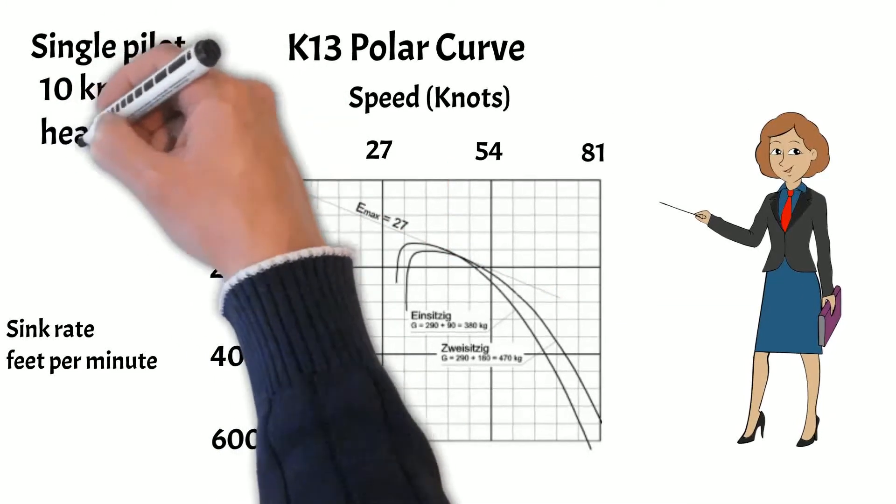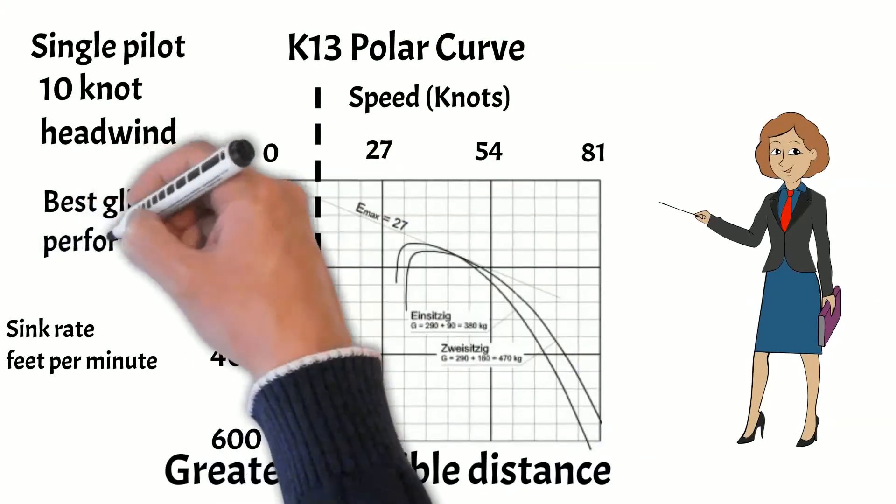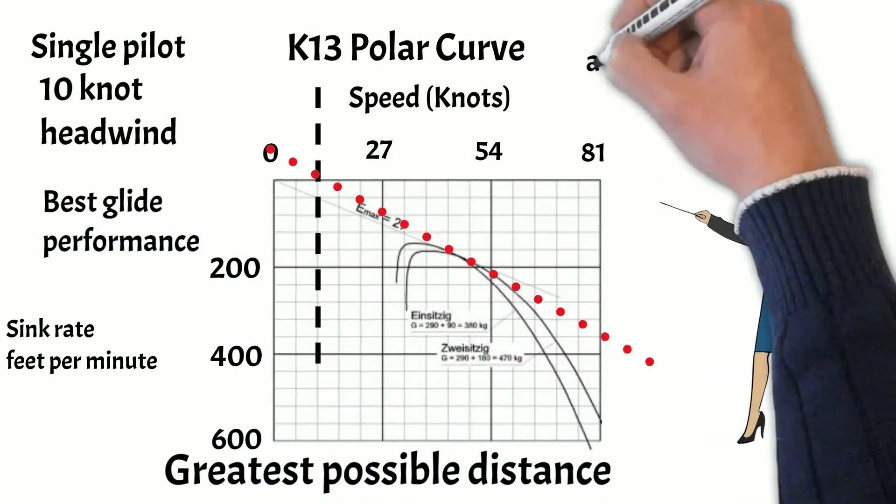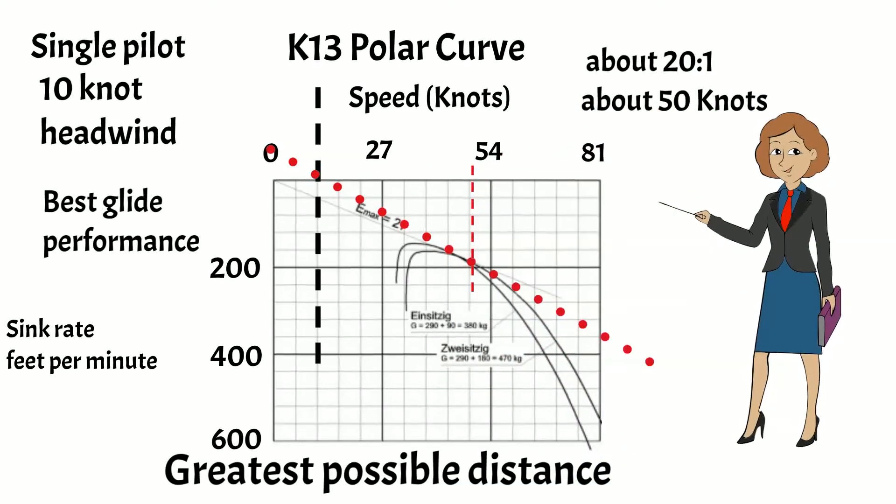With a 10 knot headwind, the best glide is here. About 20 to 1 at 50 knots. The most efficient speed for distance.